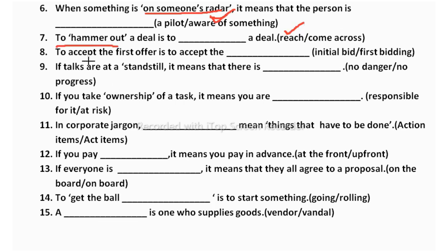The eighth one: to accept the first offer is to accept the blank — initial bid or first bidding? First bidding implies a higher price, which does not apply to a first offer. Initial bid means a return proposal, so the correct answer is initial bid.